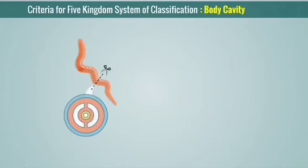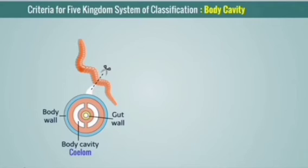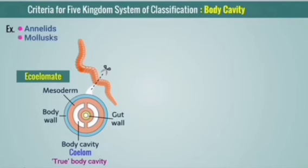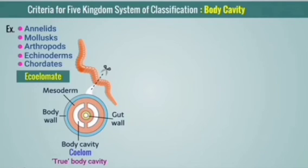Body cavity: if you make a cross section of some animals you can see the body cavity. The body cavity is located between the body wall and the gut wall, and it is lined by the mesodermal layer — so it is called a true body cavity, also called eucoelomate or coelomate. Examples of eucoelomates are annelids, molluscs, arthropods, echinoderms, and chordates.